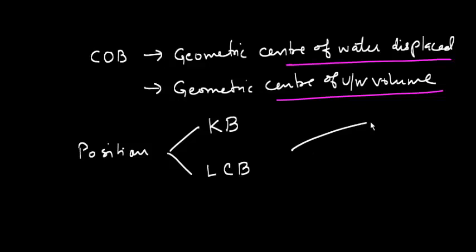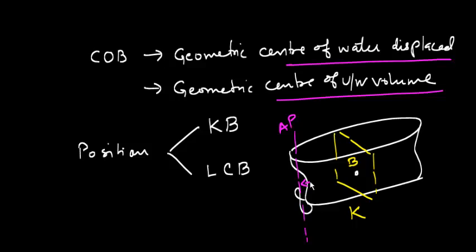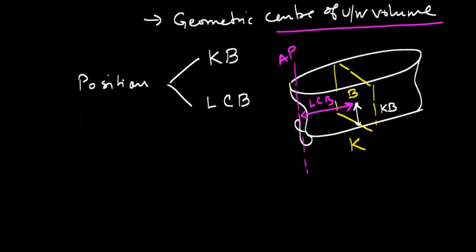How to understand this? Suppose this is a vessel, and let me just draw it in a three-dimensional way. Suppose this is the point B here, and in longitudinal direction, if we measure from aft perpendicular, it is LCB. So this distance is LCB. This distance is KB.